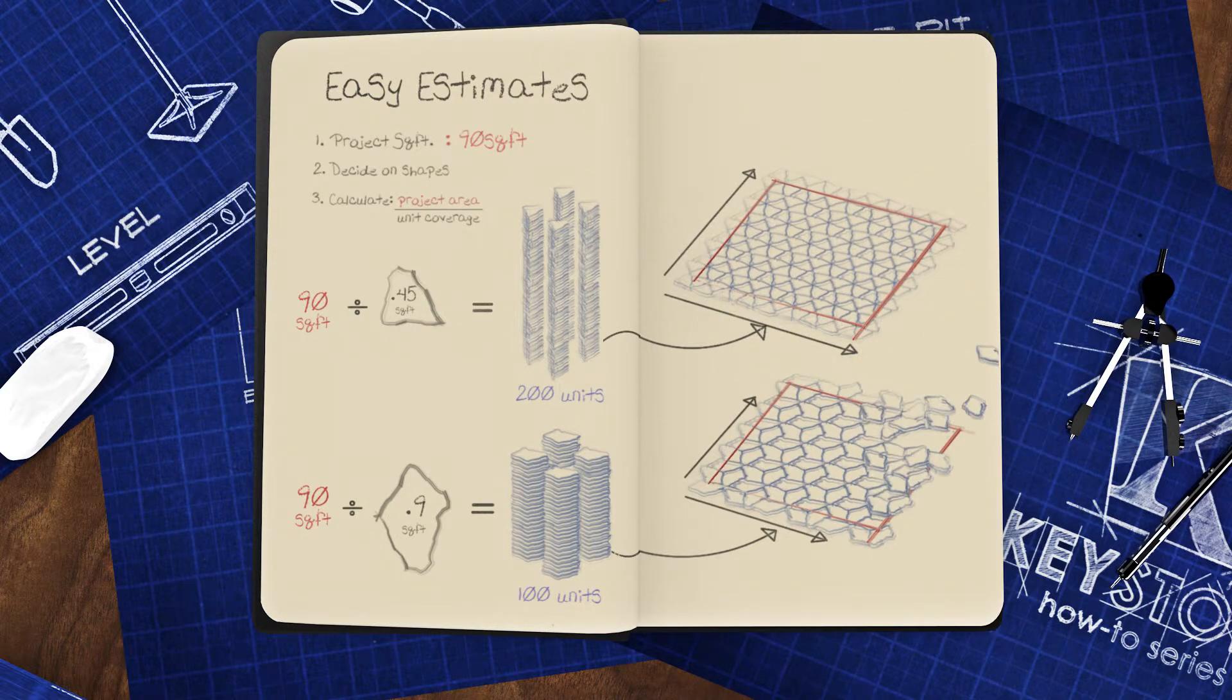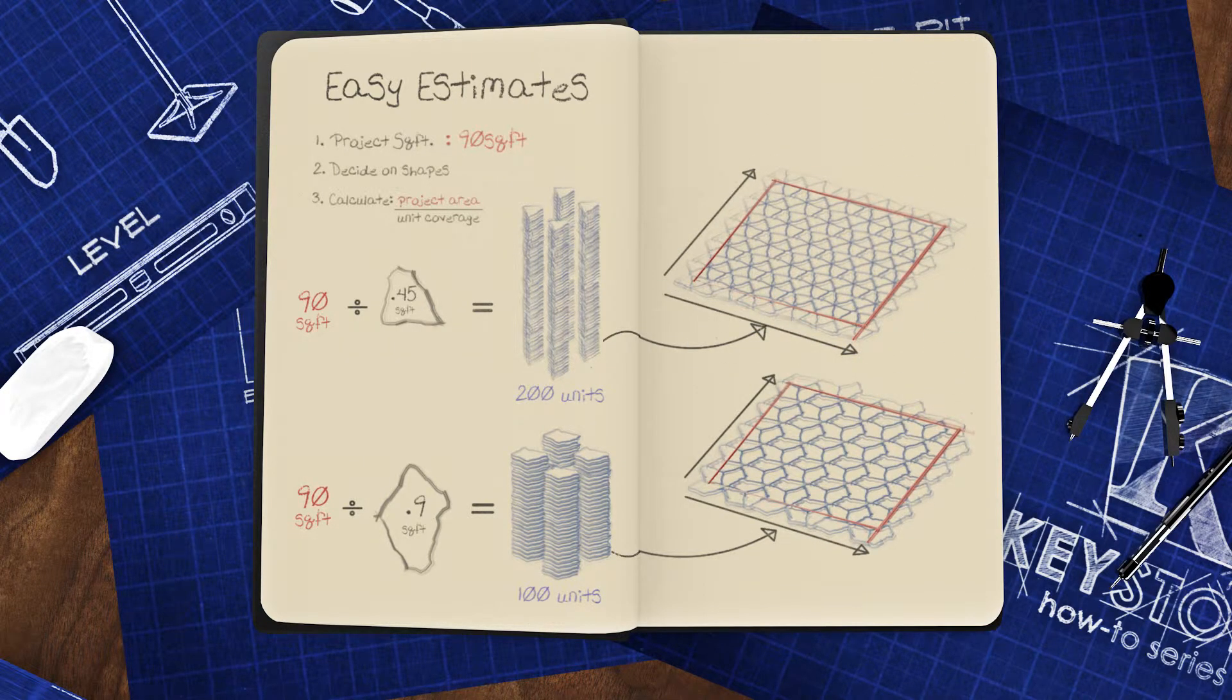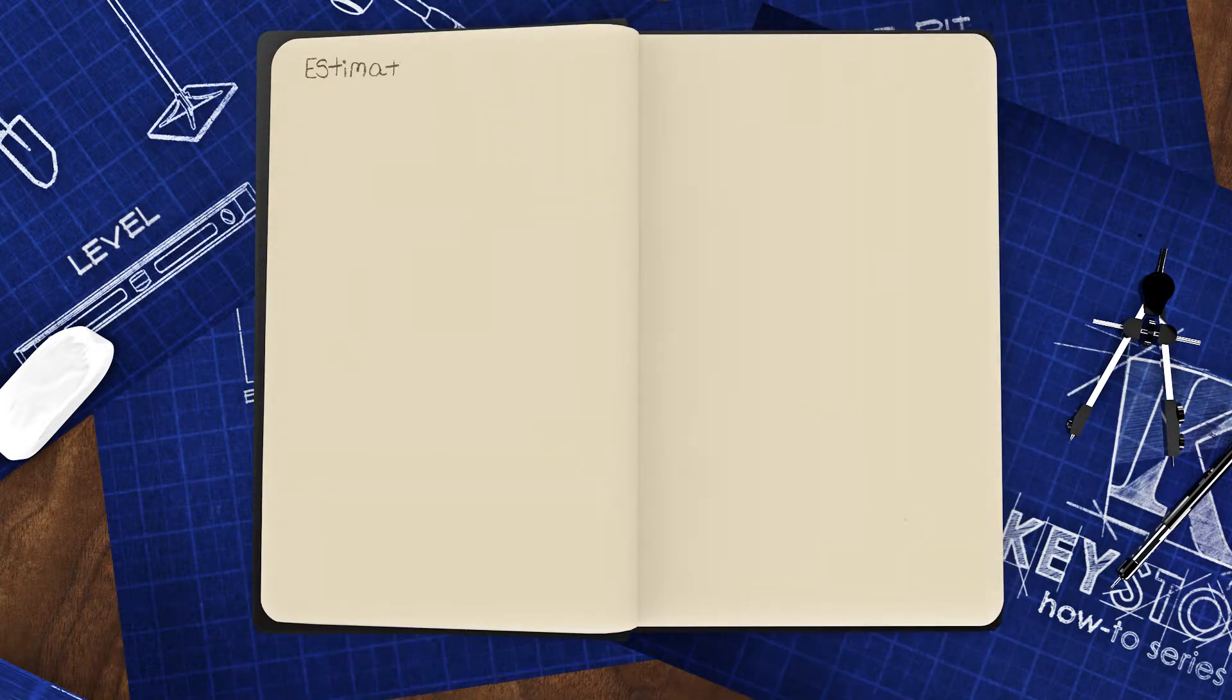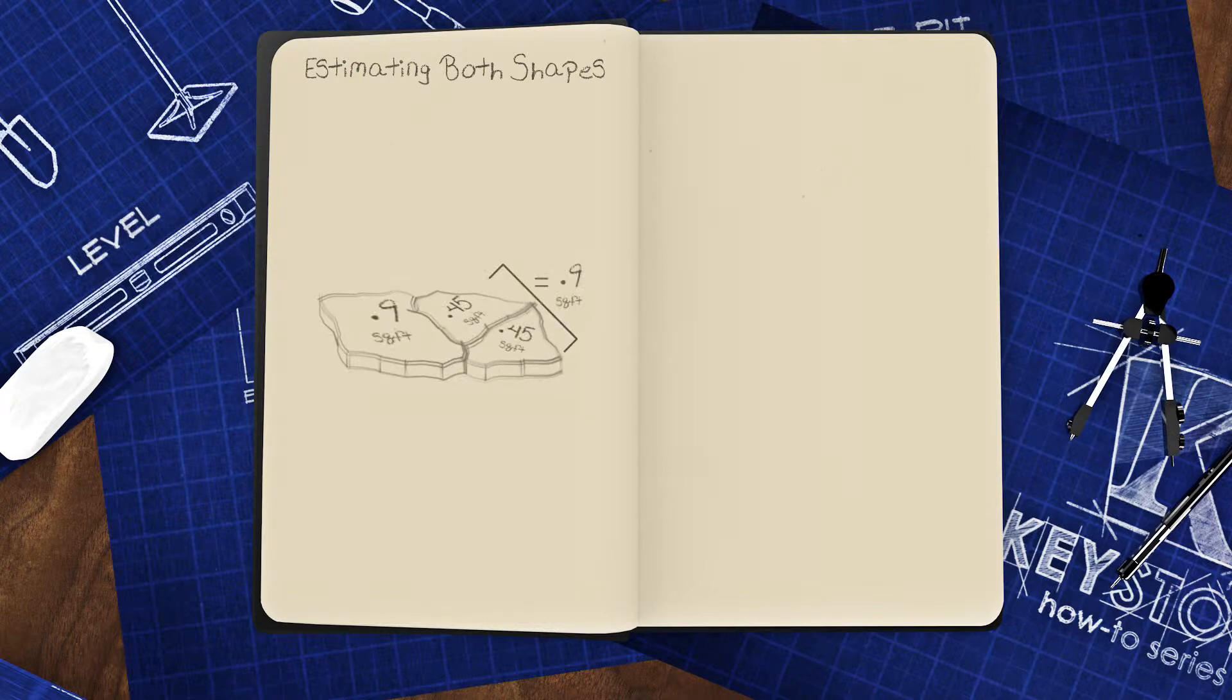If you want to use both units together, there's just one more step to complete before you calculate. You can decide how many of each shape you'd like to use for your project, but we think a Canyonstone patio looks best when both shapes have an equal amount of coverage, so that's what we're going to calculate in this example.